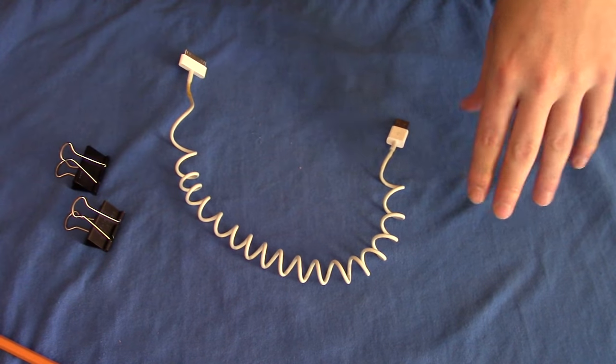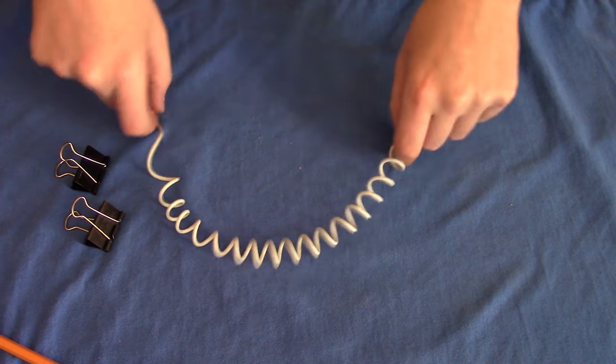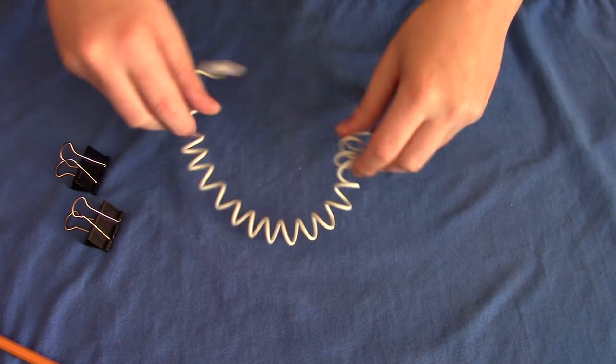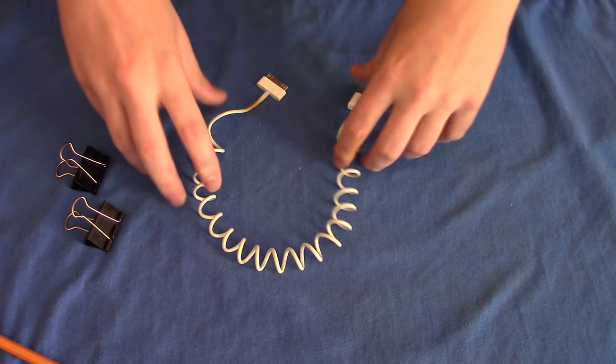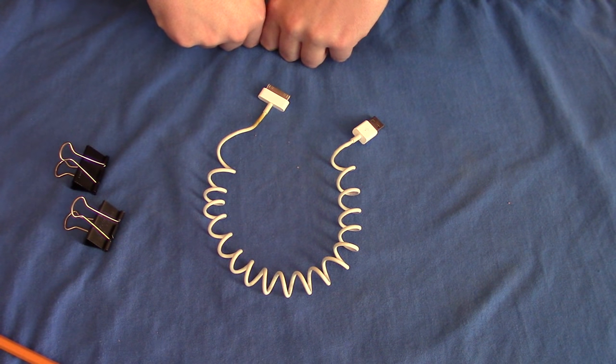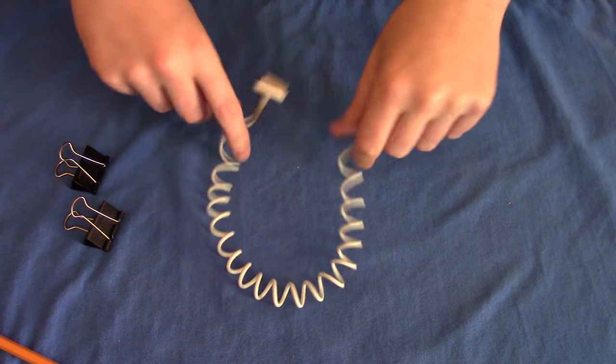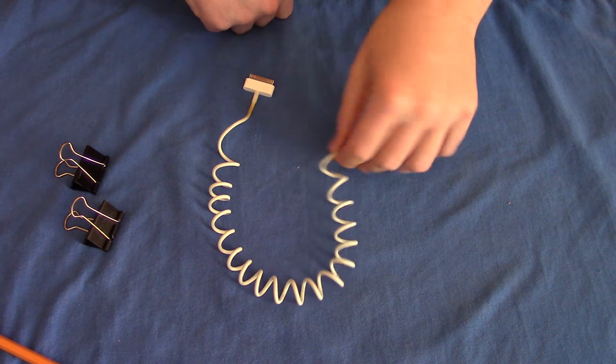Now the downside to this is it does significantly decrease the length of the cable. However, you're not spending an extra ten to fifteen dollars to have a spiral cable. You can just turn a pre-existing one into a spiral cable. As I said this works on pretty much any cable that has the rounded shape.